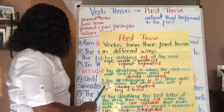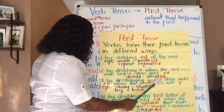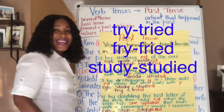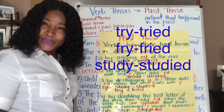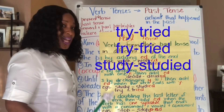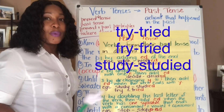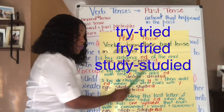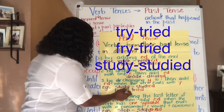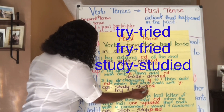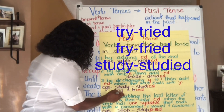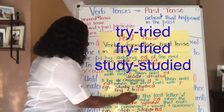Number three: by changing Y to I, then adding ED, when the verb ends with Y. If you remember when we made nouns plural, we removed the Y and added IES. But today, because it's past tense and it's the verb, we change the Y to I and add ED. For example, 'study' ends with Y — change the Y to I, then add ED. The word 'try' — change the Y to I, then add ED.